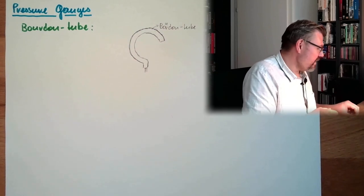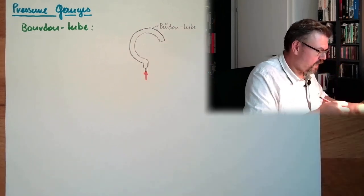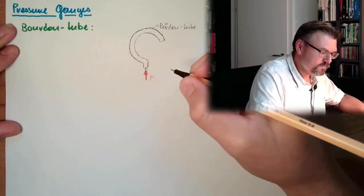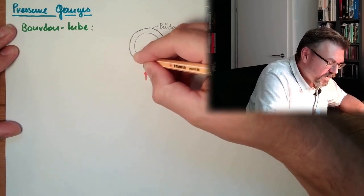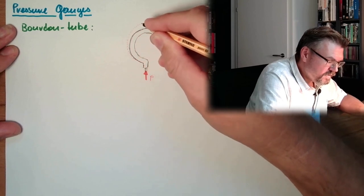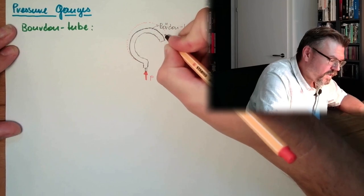And if we apply pressure here, now we apply pressure, what is happening? Then this tube tries to stretch. So the radius of this tube is getting... This is now too much I'm drawing.